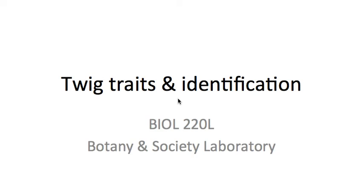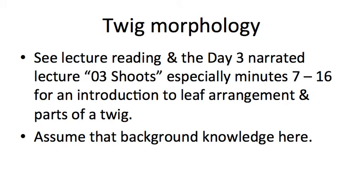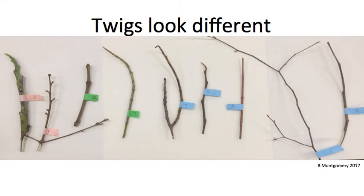In your laboratory supplies you've been given several species of twigs, and your task for lab this week will be to use those twigs and a dichotomous key to identify what species each twig comes from. To do that you need to know something about twig morphology. I'm not going to go over all aspects of twig morphology today because we've already gone over parts of that in the day three narrated lecture regarding shoots. The parts most relevant to twig identification are around minutes 7 through 16, where I talk about leaf arrangement as well as twig parts. So I'm just going to assume that background knowledge.